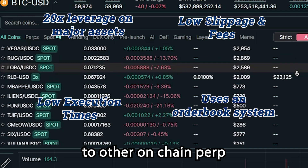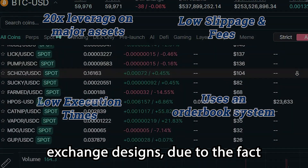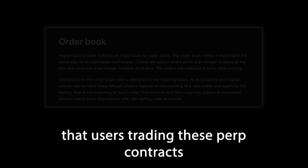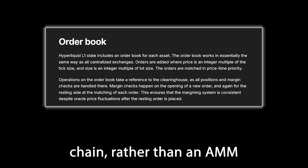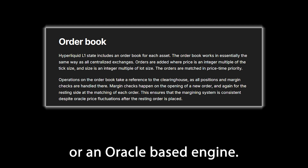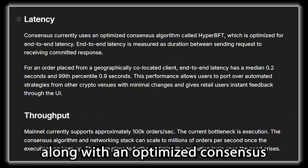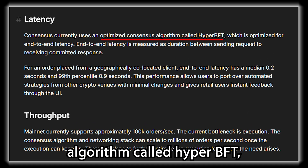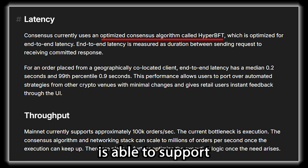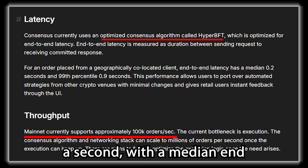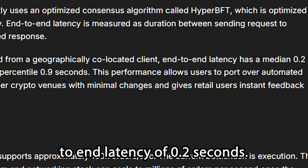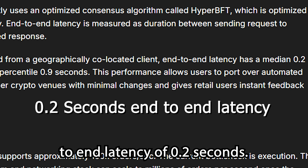Hyperliquid is different to other on-chain perp exchange designs due to the fact that users trading these perp contracts do so through an orderbook on a custom chain rather than an AMM or an oracle-based engine. Using their custom chain design along with an optimized consensus algorithm called HyperBFT, the Hyperliquid platform is able to support approximately 100,000 orders a second with a median end-to-end latency of 0.2 seconds.